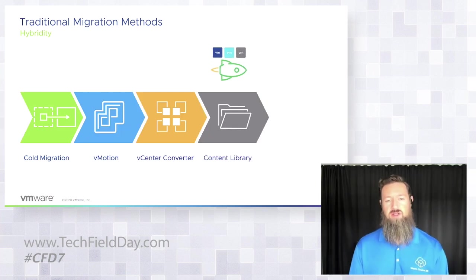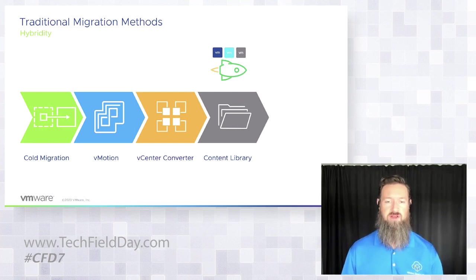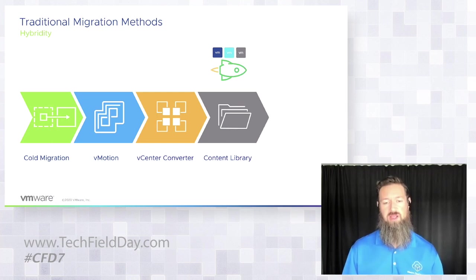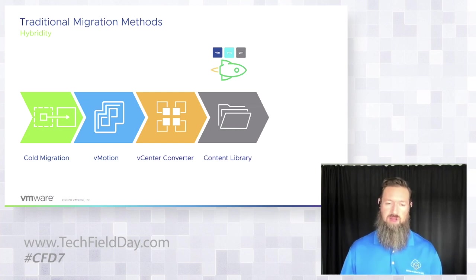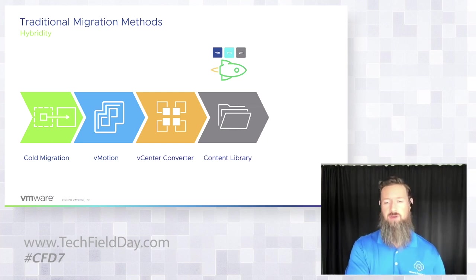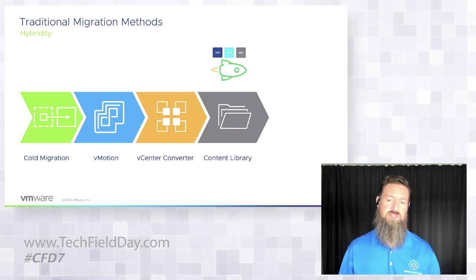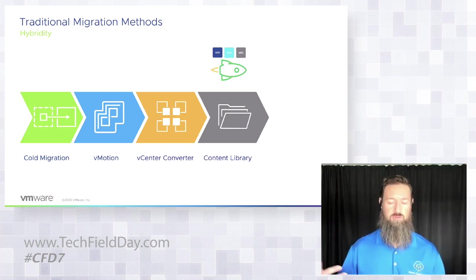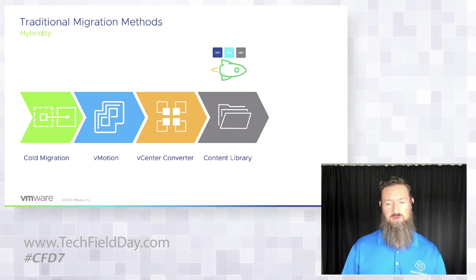Content Library is a way to migrate your ISOs, templates, and other files — your gold images, anything you're using to deploy on-prem today. You can create a content library on-premises, move everything into it, then create a content library in the cloud and subscribe back to on-premises to ingest all of that. This allows you to ingest all your images and templates into the cloud so you can start deploying new workloads without having to FTP them or rebuild templates. They stay in lockstep and in sync.